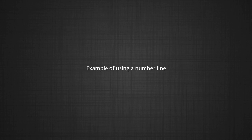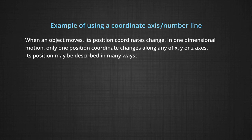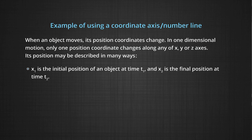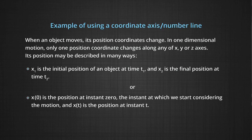We are going to take an example using a number line. When an object moves, its position coordinates change. In one-dimensional motion, only one position coordinate changes along any of the x, y, or z axis. The position may be described in many ways. If x1 is the initial position at time t1 and x2 is the final position at time t2, or x0 is the position at instant 0, which is when we start considering the motion, and xt the position at instant t.